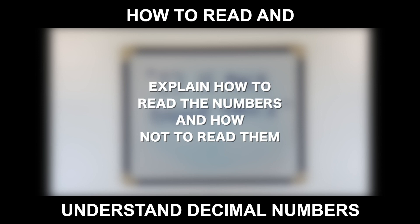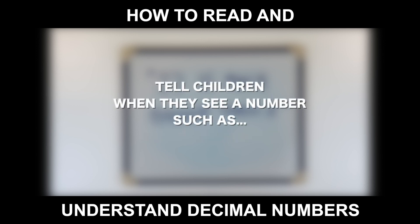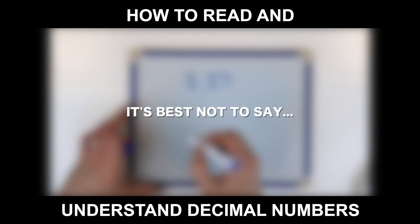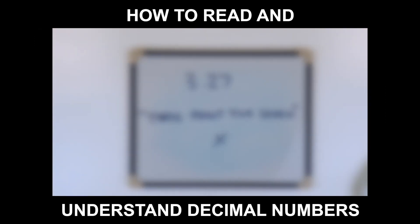Explain how to read the numbers and how not to read them. Tell children that when they see a number such as 3.27, it's best not to say 3 point 27, as this is just spelling the number out.